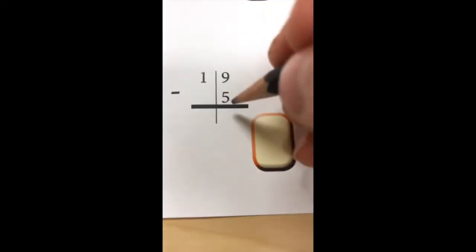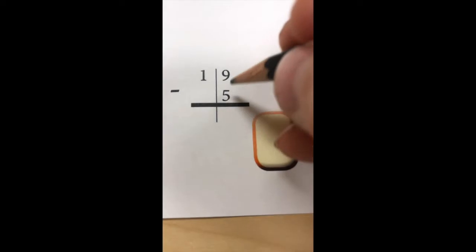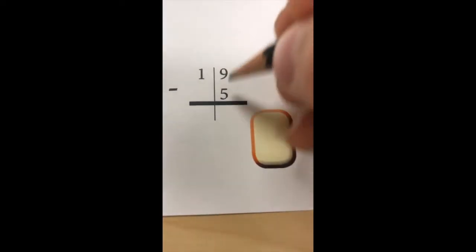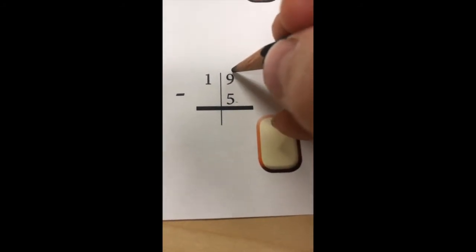Let's try this problem, 19 minus 5. Again, if I were to diagram this, I would have 1, 10, 9 ones. I can take the 5 away from the 9.